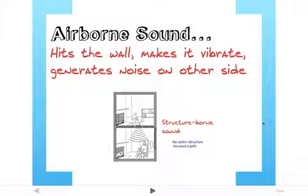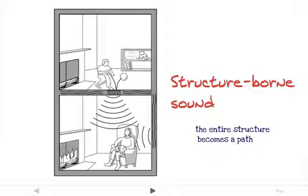Airborne sound hits a partition and makes it vibrate, generating noise on the other side. It needs an air path to transfer through the partition. If the partition is airtight, then the sound vibration will cause the partition itself to create a sound. Structure-borne sound, on the other hand, is when something actually hits the structure — there's no air between the source of the noise and the structure itself. When this happens, the entire structure becomes a pathway for the sound energy to travel. Airborne sound is less disturbing than structure-borne sound.